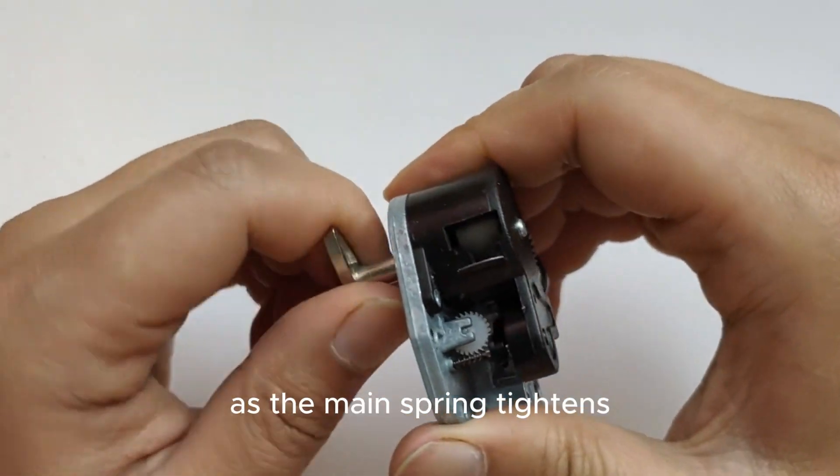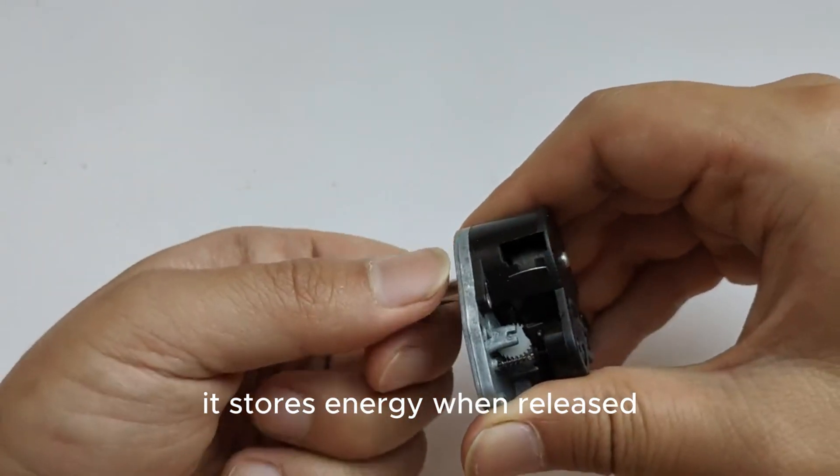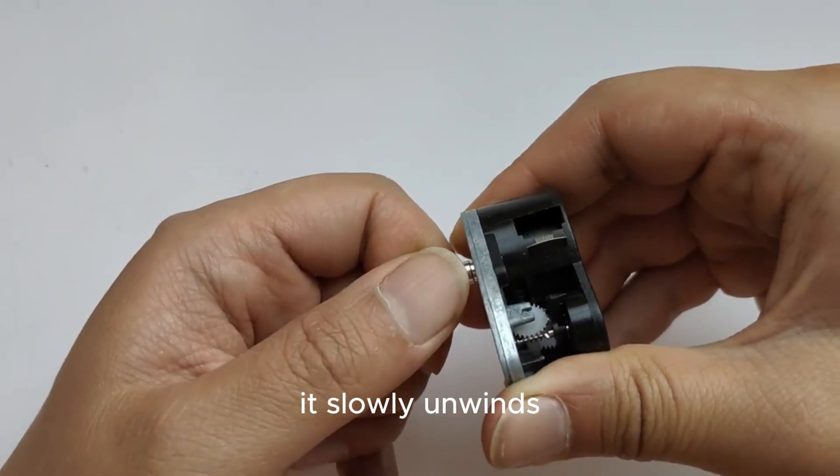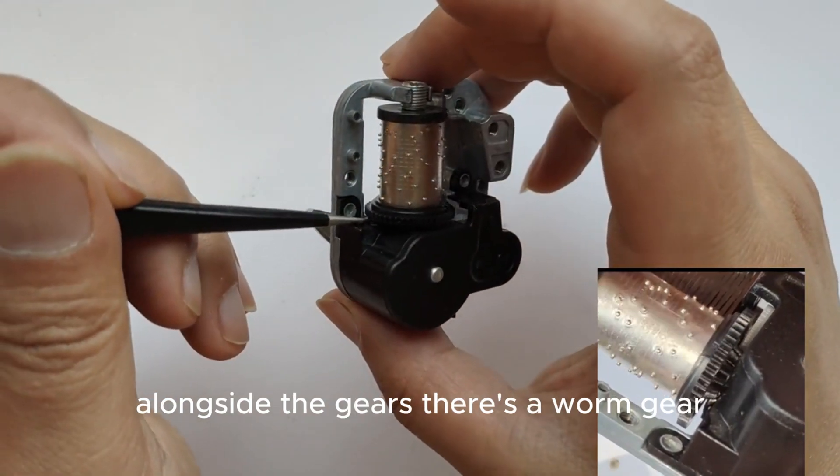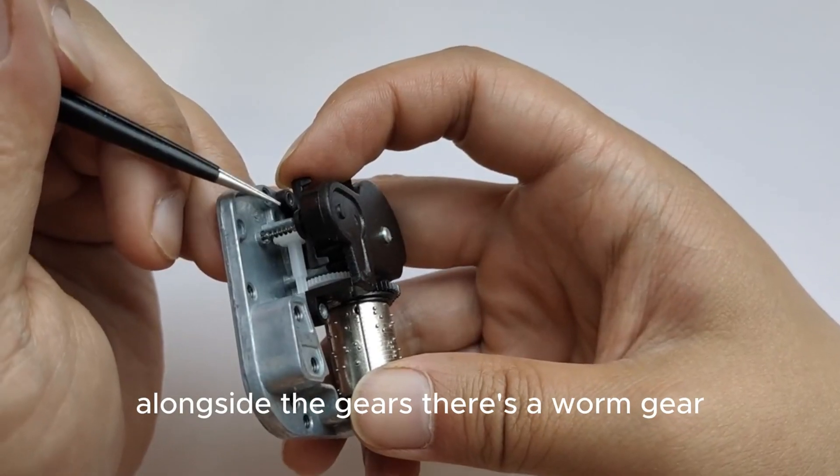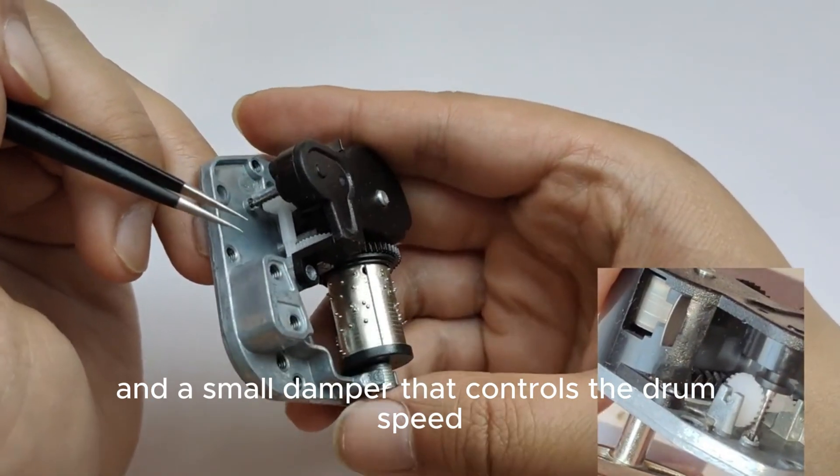As the mainspring tightens, it stores energy. When released, it slowly unwinds, powering a gear train that turns the music drum. Alongside the gears there's a worm gear and a small damper that controls the drum speed. This keeps the melody flowing at just the right pace.